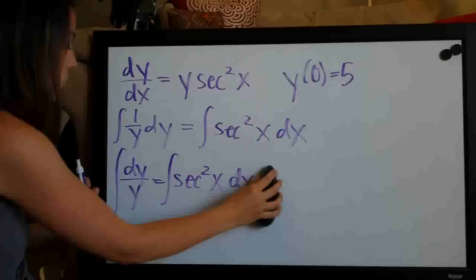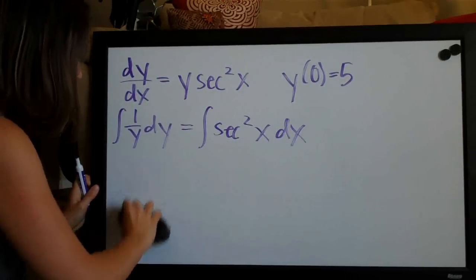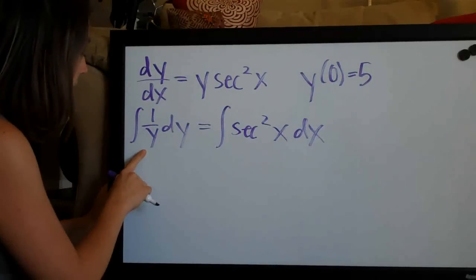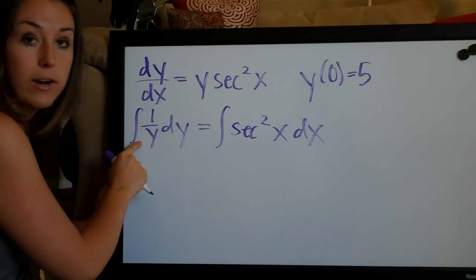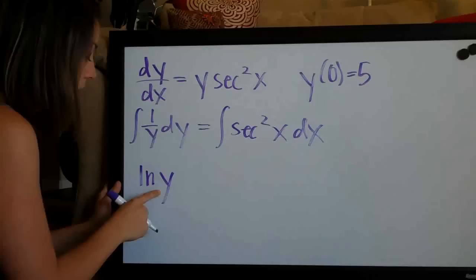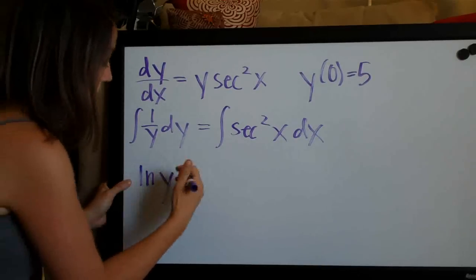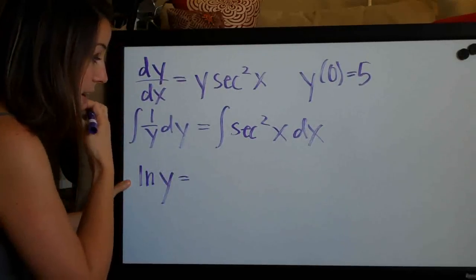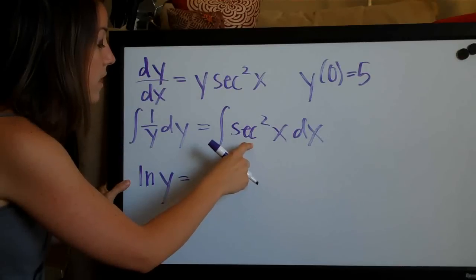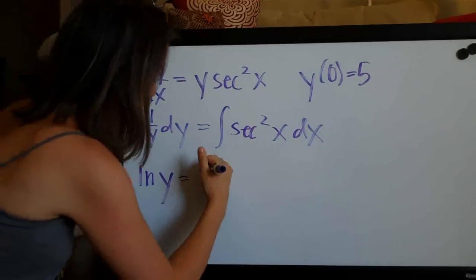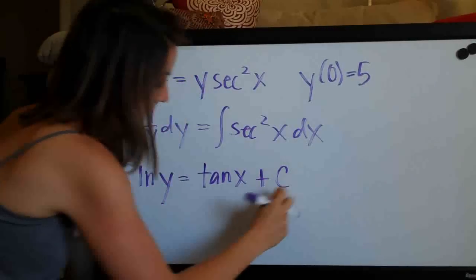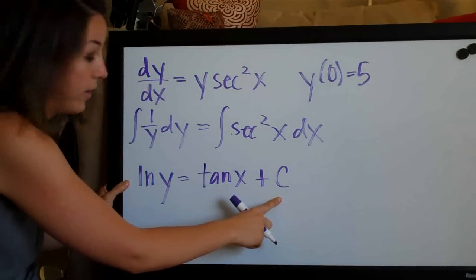So those are our integrals in their most simple forms and now we're going to go ahead and integrate. The left side should look pretty obvious whenever we have one over the variable. The integral of that is natural log or ln of the variable. So the left side ends up being ln of y and then the right side, this is a formula that you should memorize. The integral of secant squared of x is actually just tangent of x and then we'll go ahead and add c to the right side as we always do to account for the constant.